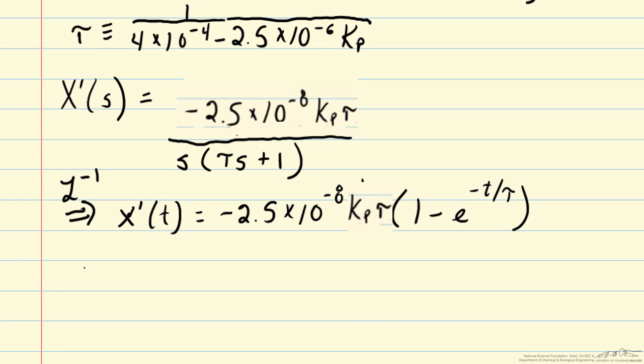Now that we have this expression for X prime of T going from T equal to 0 all the way out to T equal to infinity, we can inspect this expression to see what it tells us about the closed loop dynamics. One thing we can see is that the process is going to evolve over a time constant of tau, and we can change tau by changing Kp, our controller constant.